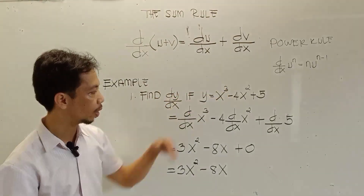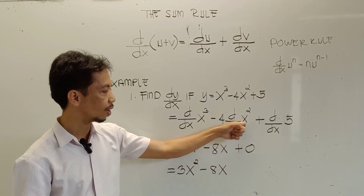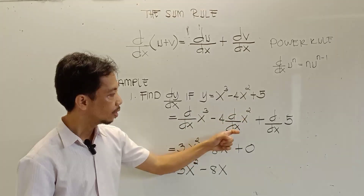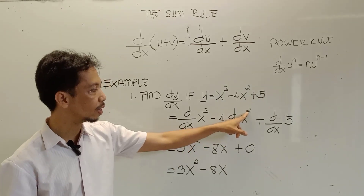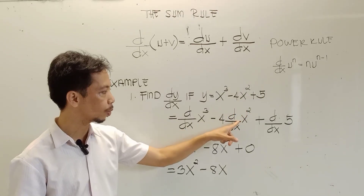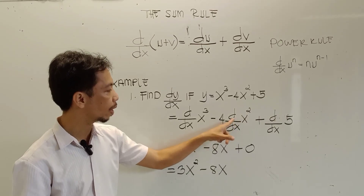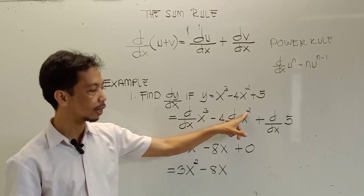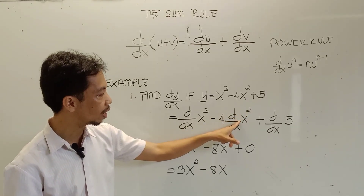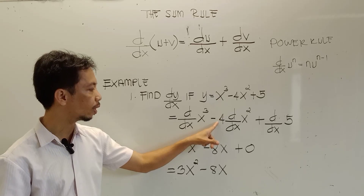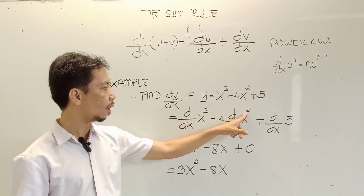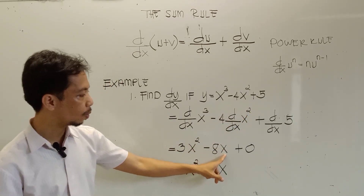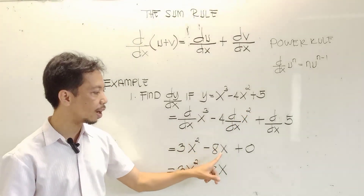Next, for the second term, we have negative 4 times d/dx of x squared. First, let us find the derivative of x squared: make the exponent the numerical coefficient of x, giving us 2x, multiplied by negative 4 gives negative 8. Then, 2 subtracted by positive 1 is positive 1, so what remains is just x in this term, giving us negative 8x.